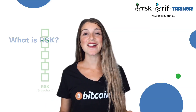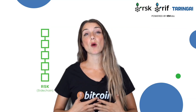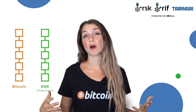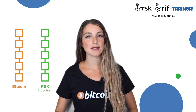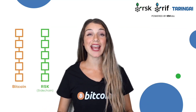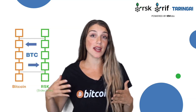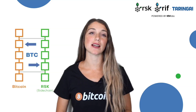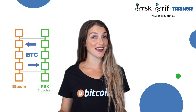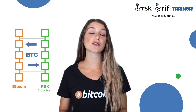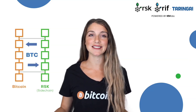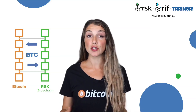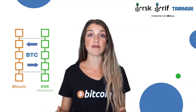So what is RSK? RSK is a layer two platform over the Bitcoin blockchain, adding the capacity to create and execute smart contracts with Bitcoin as fuel. It also provides scalability by allowing more transactions per second with lower transaction costs, and it allows new use cases and new ways to create value by integrating dApps.